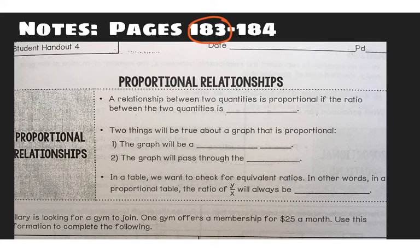It says a relationship between two quantities is proportional if the ratio between the two quantities is constant, and that means the same. So for instance we might be looking at 12 over 2, which simplifies down to 6, or maybe 18 over 3, which simplifies down to 6. So we're just looking at those equivalent ratios, or we could think of it as equivalent fractions.